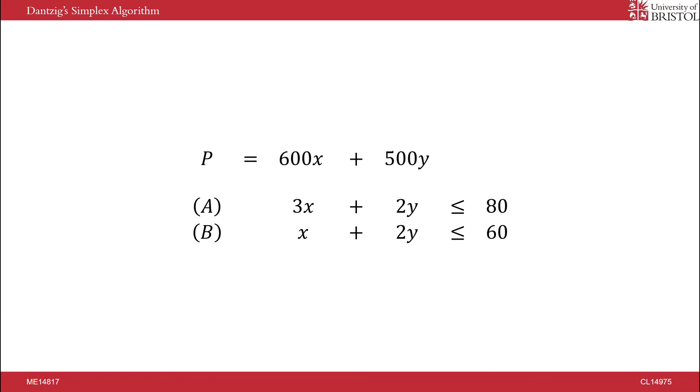Our two constraints come from machines A and B, as they can only work for 80 and 60 hours respectively. Machine A leads to the constraint 3X plus 2Y is less than or equal to 80. Machine B leads to the constraint X plus 2Y is less than or equal to 60. We would like to find values of X and Y which will maximize this objective function.